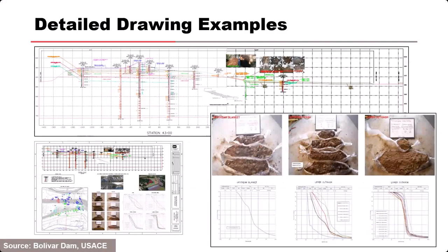This drawing example is from Bolivar Dam, analyzing backward erosion piping in the foundation. It includes boring data with soil classifications, moisture content, gradation plots, photos of each foundation layer, and piezometric response all in one drawing. Looking at the three layers — the upper outwash, the lower outwash — which one is most susceptible to backward erosion piping? It's the one with the uniform gradation, showing a straight line on the gradation plot.